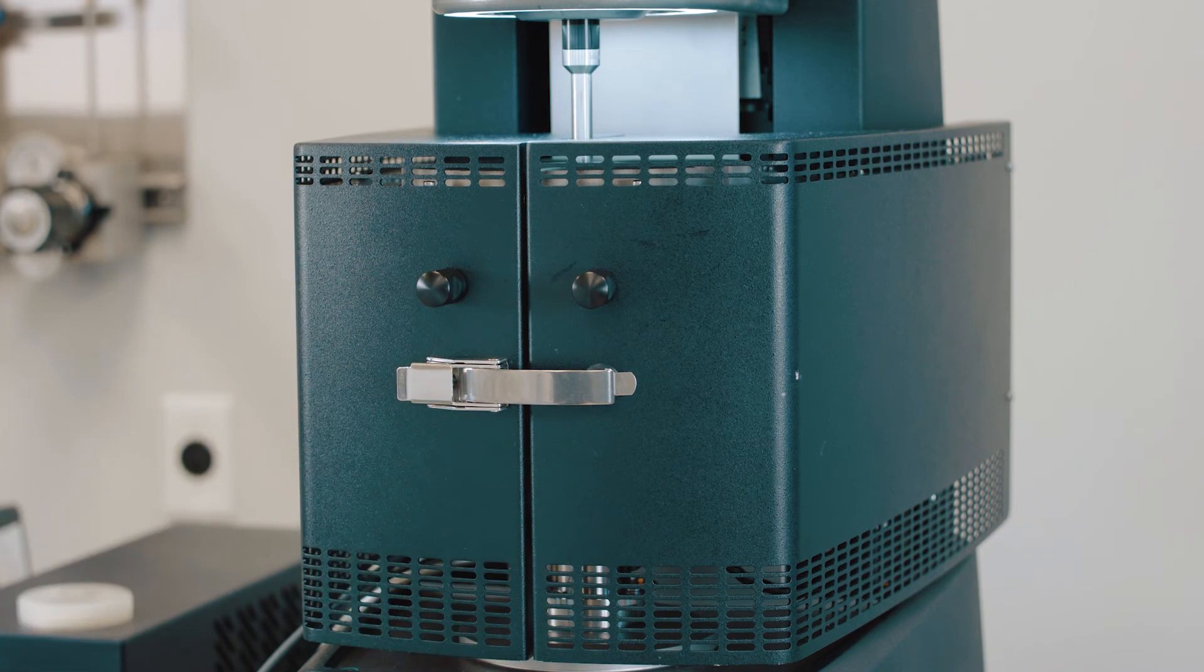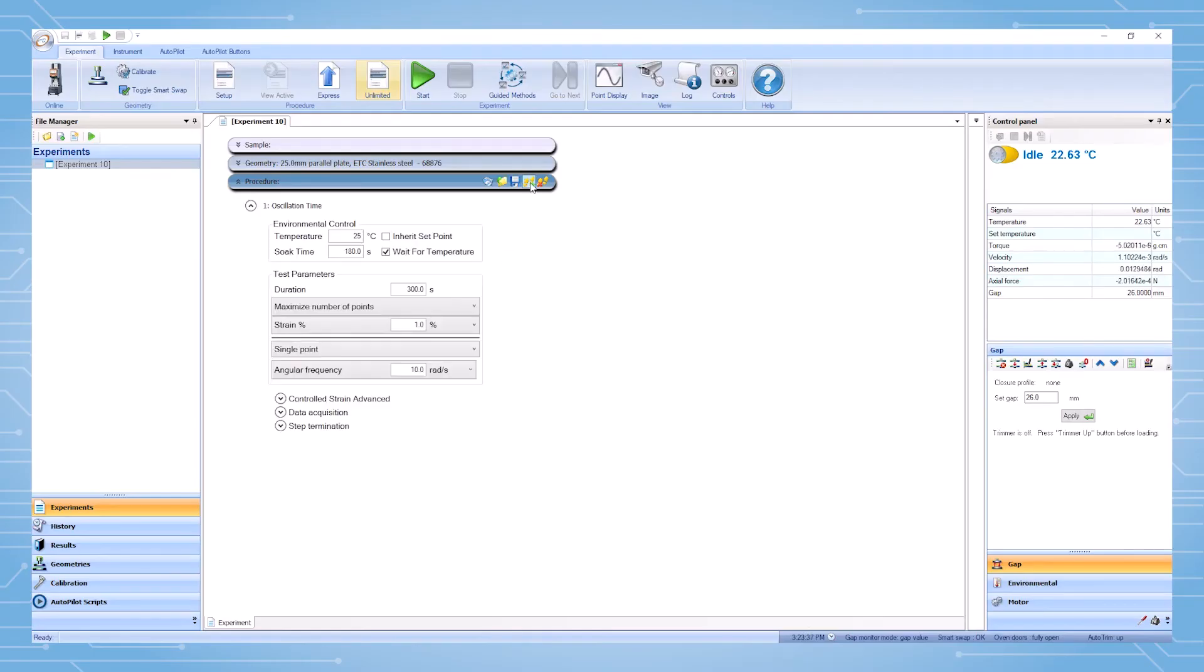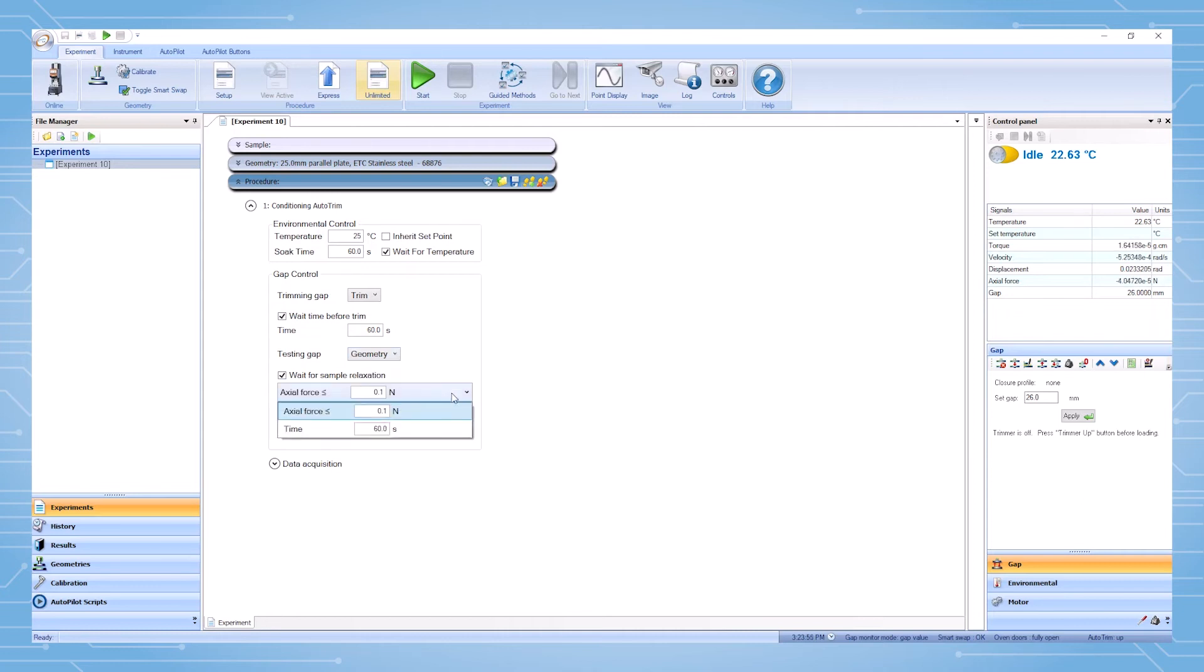The Auto Trim Step is programmed in TRIOS by inserting a Conditioning Auto Trim Step. Here the user can control the temperature, trimming gap, wait time, testing gap, and sample relaxation condition. Identify that the trimmer moves up after the test and that the motor lock be enabled.